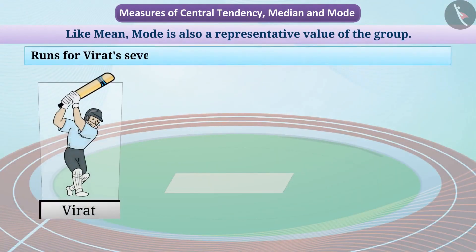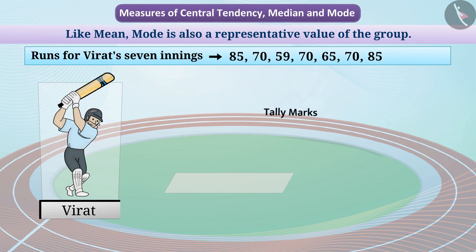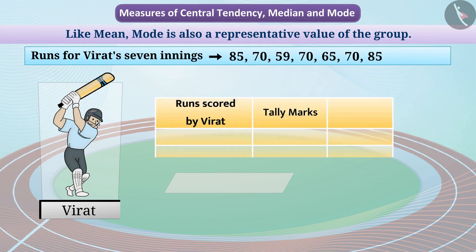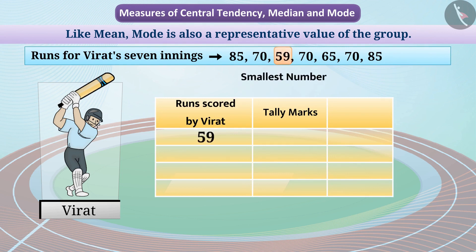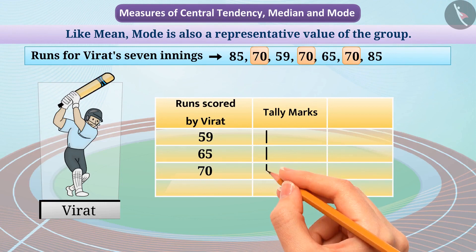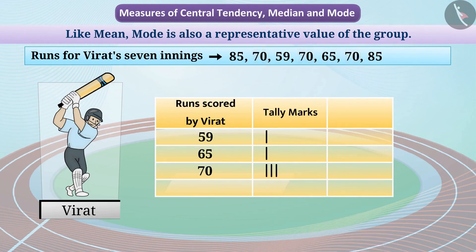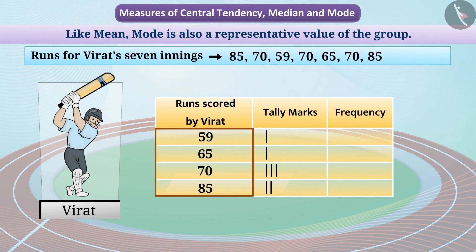Let us take the data for the number of runs for Virat's 7 innings. If we create a table using tally marks, we observe that 59 appears once, 65 appears once, 70 appears three times, and 85 appears two times. From this table, we know that 70 is the most frequently observed value in this group. We can call this the mode of the group.